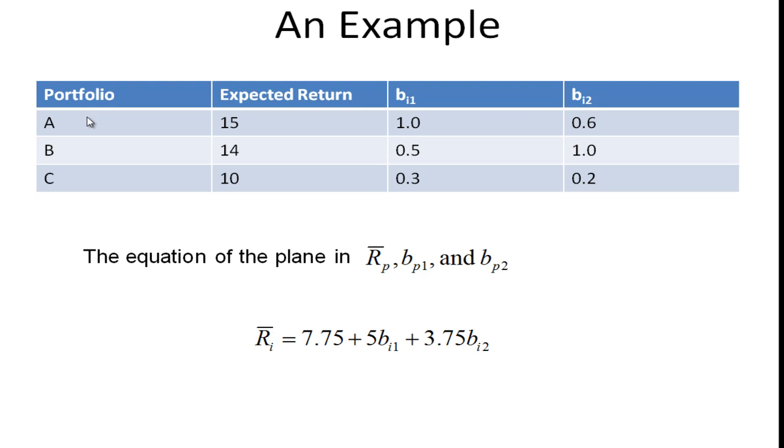So what we have here is three equations and three unknowns, so what we can do is solve this as the equation for a plane. We're solving for A and then the coefficient for B1 and for B2, and we get this equation. I'm not going to do that here, but you can work that out for yourself. So the expected return for security i is 7.75 plus 5 times whatever the first systematic risk factor is, plus 3.75 times whatever the second systematic risk factor is.